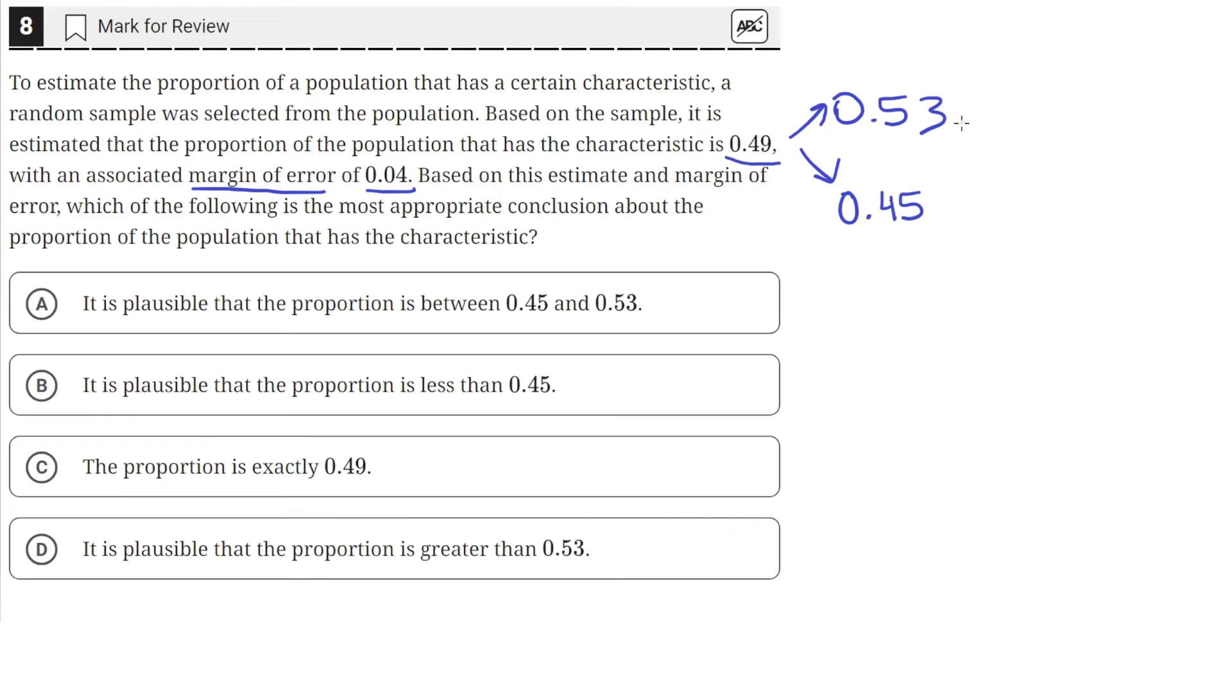So in this range is the plausible values of the proportion of the population that has the characteristic, which is answer choice A.